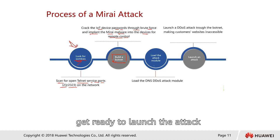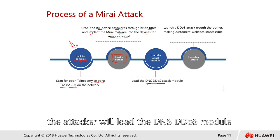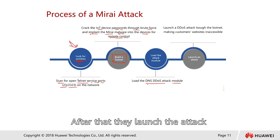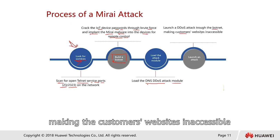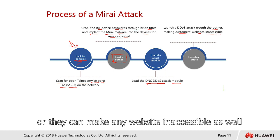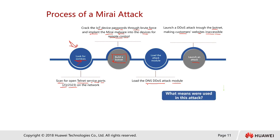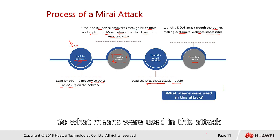That is one reason why IoT devices are so easily targeted. After that, the attacker builds a botnet — like building an army — to get ready to launch the attack. The attacker loads the DNS DDoS attack module into the Mirai botnet and then launches the attack, making the target website inaccessible.